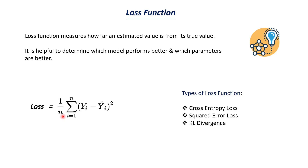There are different types of loss function. The important ones are: cross-entropy loss, squared error loss, and KL divergence. We will be discussing these three in detail later. In this video, let's focus on understanding more about this loss function and how we can calculate it.